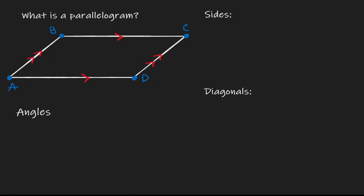So let's write this down in terms of sides. Opposite sides are parallel. Now, there's another property that opposite sides share in common. If we have this scenario where opposite sides are parallel, then we have another property when it comes to sides: opposite sides are also congruent to each other.